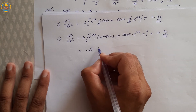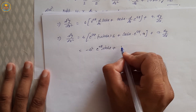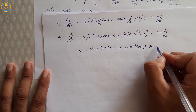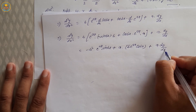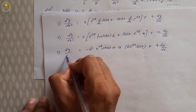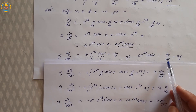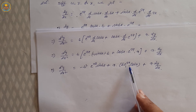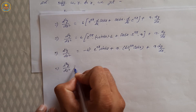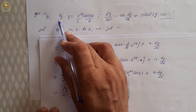d²y/dx² = −b² · e^(ax) · sin(bx) + a · b · e^(ax) · cos(bx) + a · dy/dx. Putting the value of b · e^(ax) · cos(bx) = dy/dx − a·y: d²y/dx² = −b² · e^(ax) · sin(bx) + a·(dy/dx − a·y) + a · dy/dx. Since e^(ax)·sin(bx) = y.